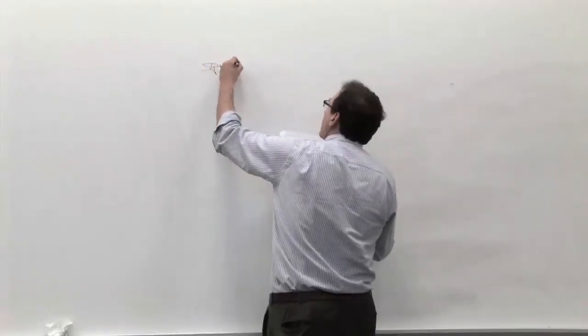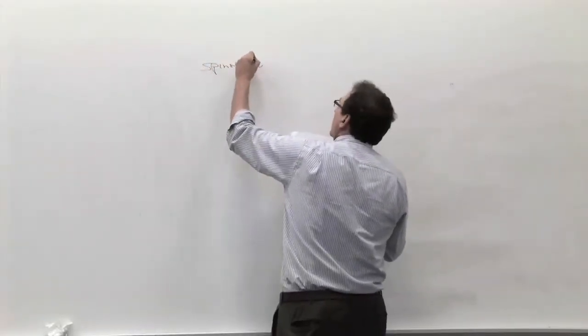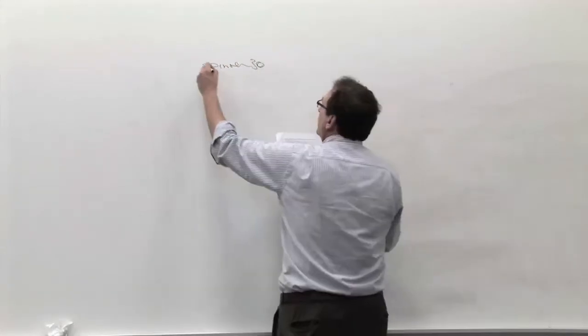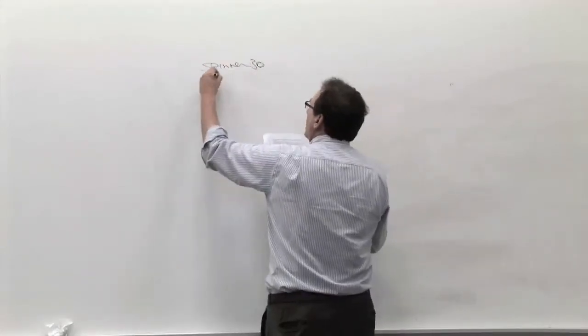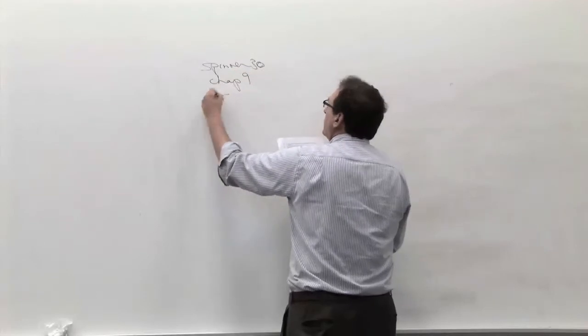Spinner 30, that should be the name of the 30 which relates to chapter 9, and this is going to be an introduction.